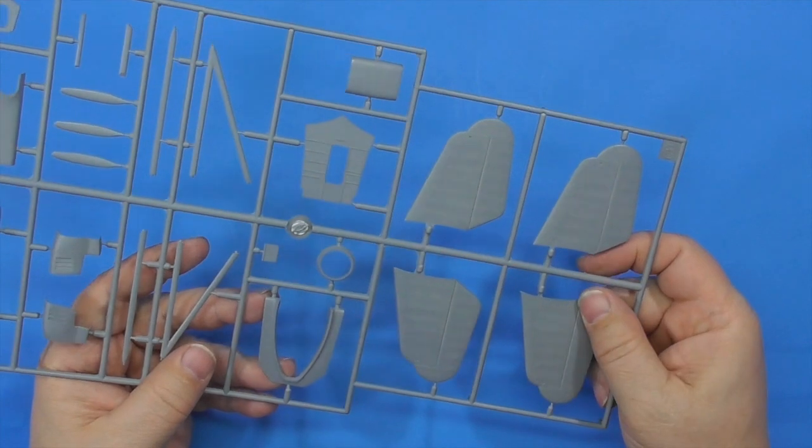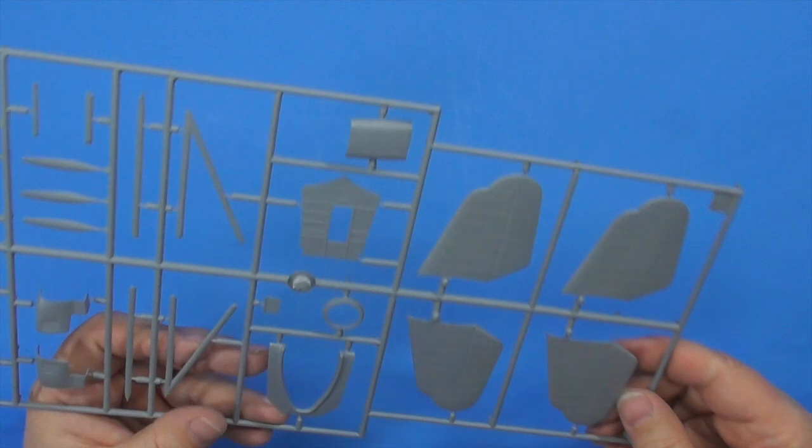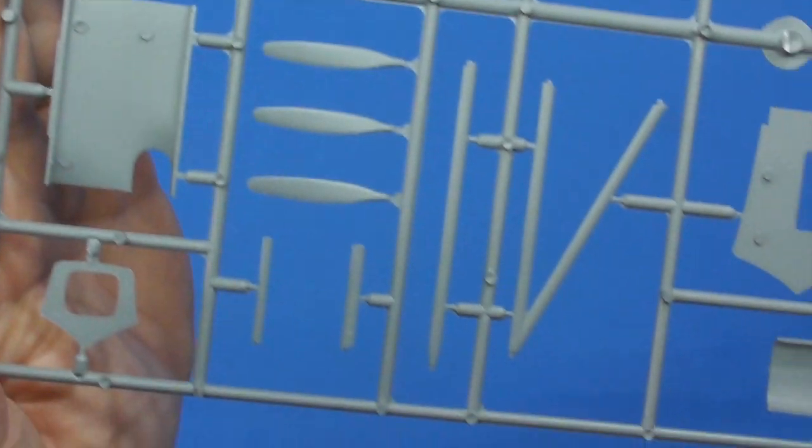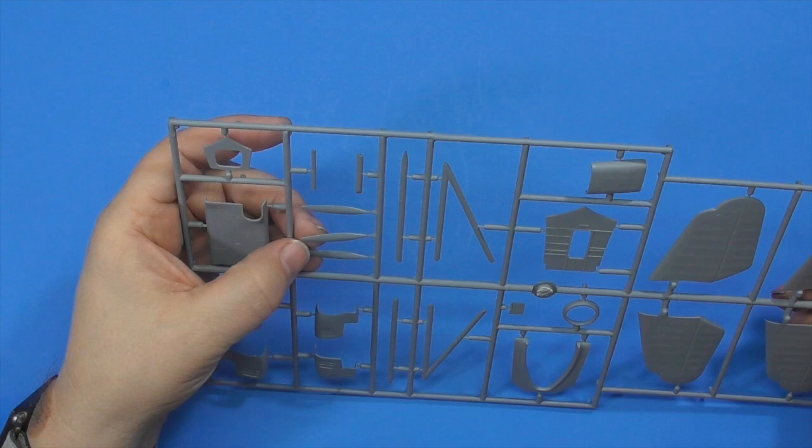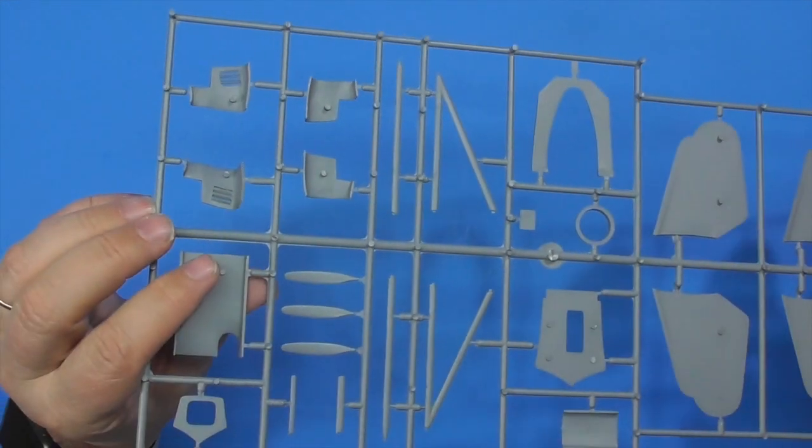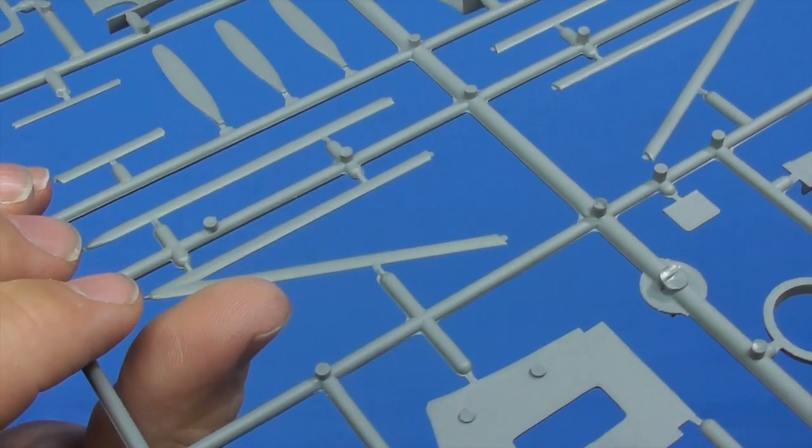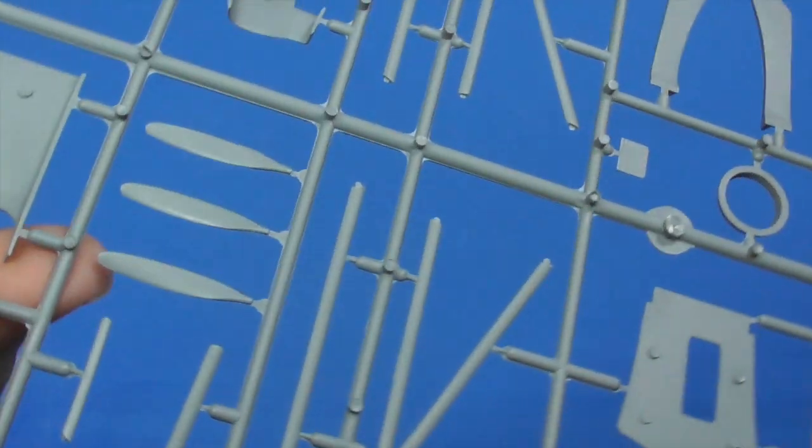Now these don't have any rivets. I'm not sure if it's because they're fabric and they're stretched over, or if they just left it out. There's all those massive ejector pin marks on the other side. But the props look really nice. No real flash, no burring. No burring on the struts, no burring on the props. A little tiny bit of flash on the end of a couple of them, but just a little bit.